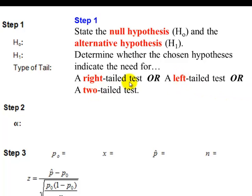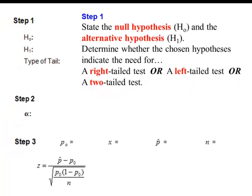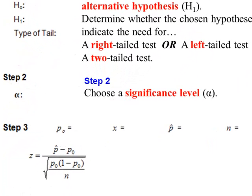So how do we know which one of these we're going to use? Well that comes from the alternative, and there will be wording in the problem that will indicate which tail to use. Number two, the significance level alpha will be stated in the problem.